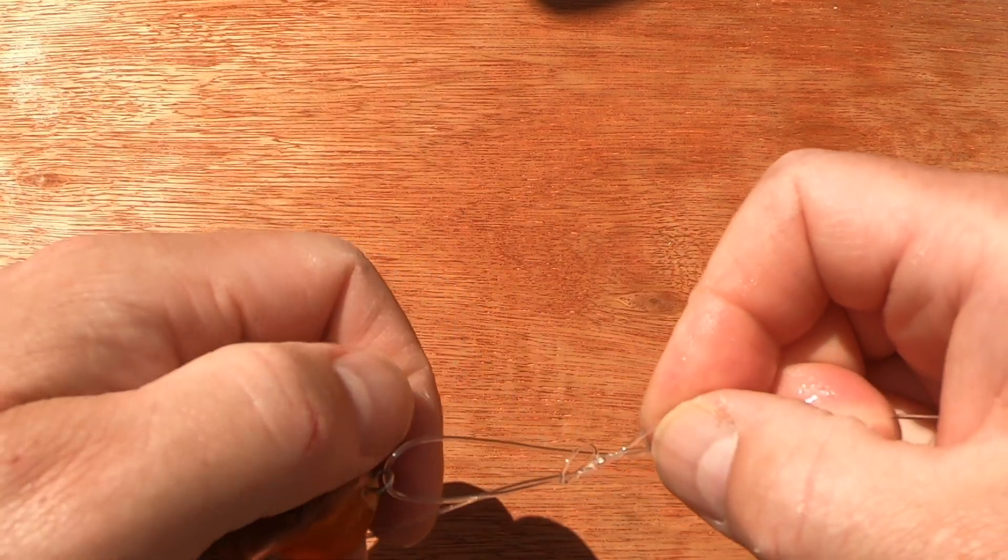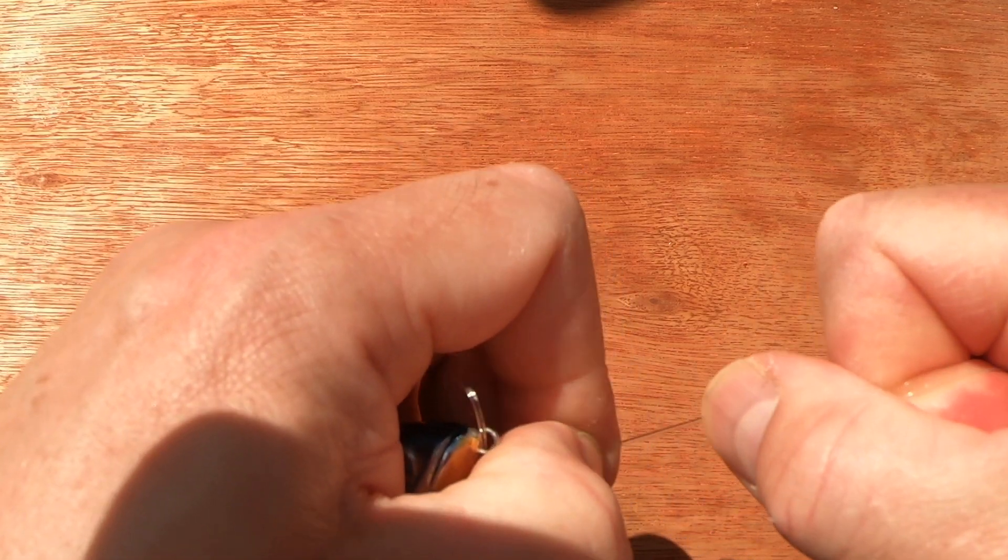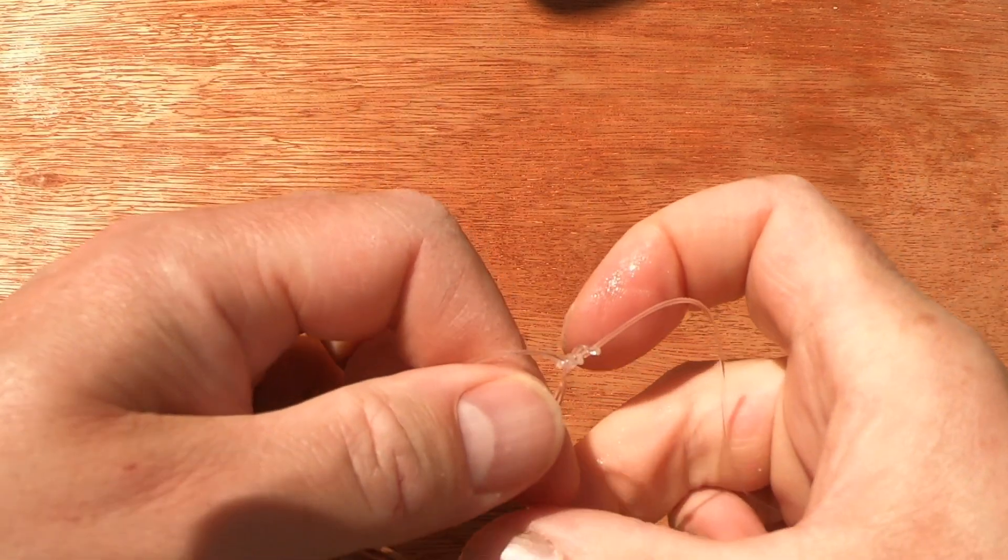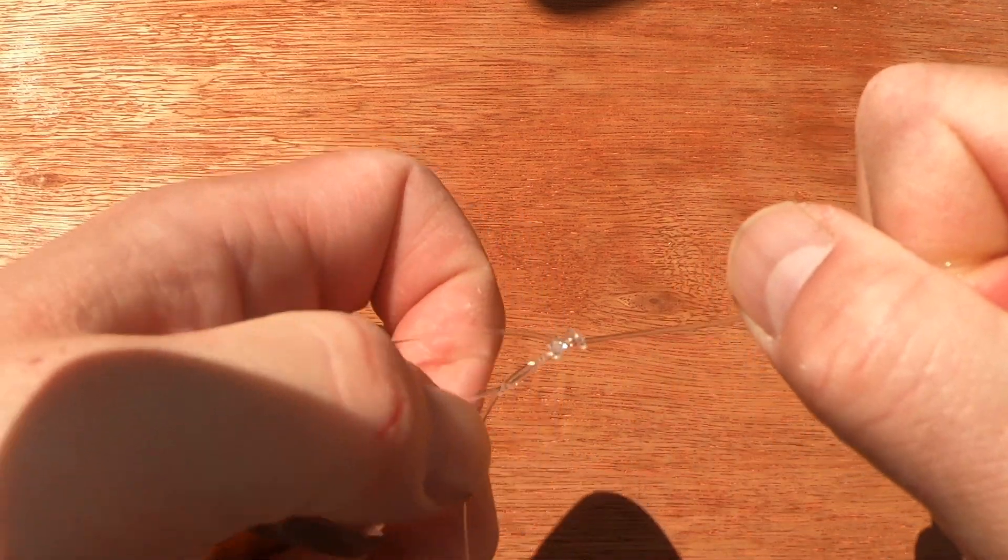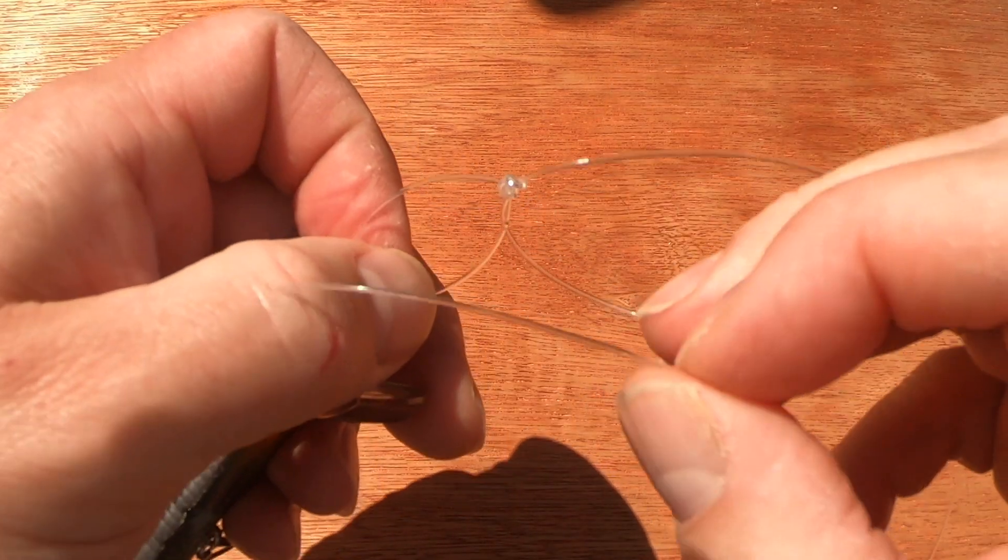So at this point you need to wet everything down and you need to pull your line, your knot down, cinch it down, pull it tight so it forms a loop on itself.